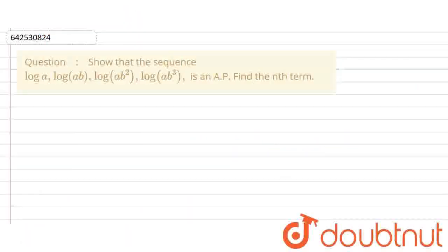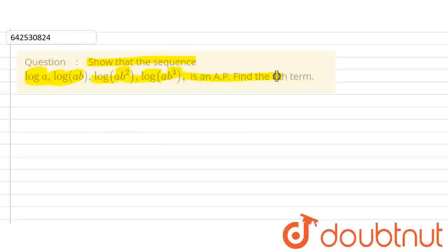Hello everyone. Our question is: we have to show that the sequence log(a), log(ab), log(ab²), log(ab³) up to n terms is an AP, and we have to find the nth term also.